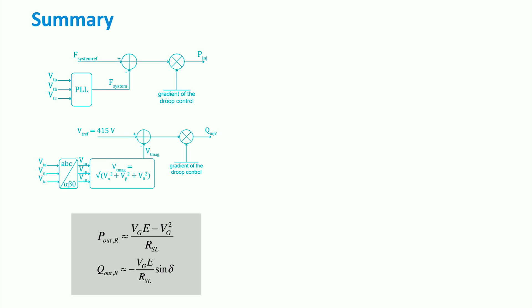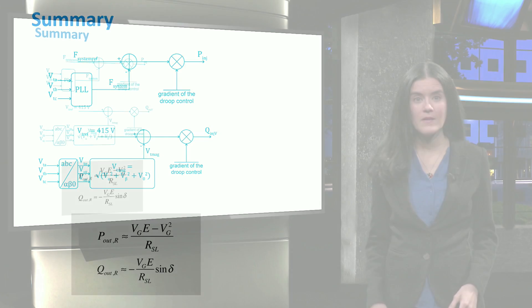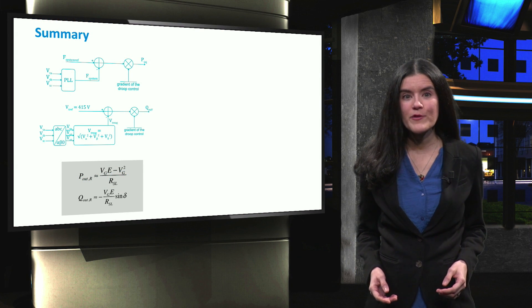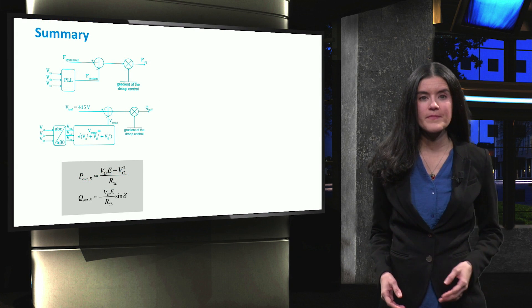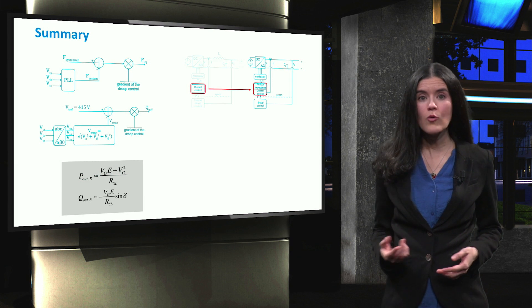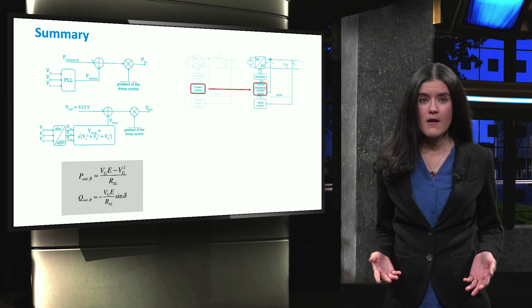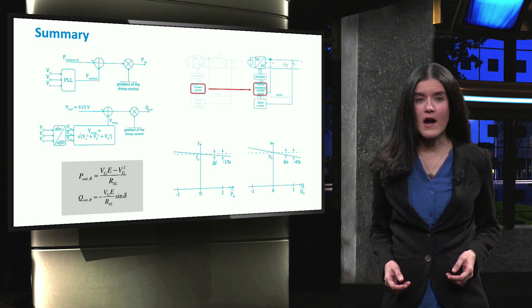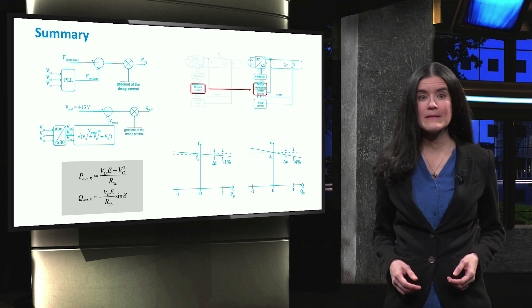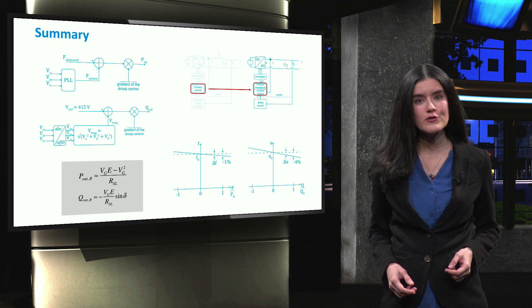Next, we saw that in a microgrid, lines have a high resistive nature, which leads to the necessity to apply an inverse droop strategy. However, inverse droop shows several disadvantages. Conventional droop can be used if a virtual or fictitious impedance is implemented in power converters. Finally, we saw that there are IEEE and IEC standard limits for voltage and frequency deviations in microgrids.